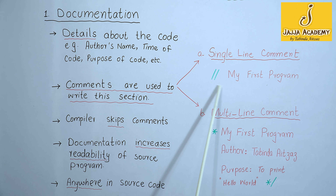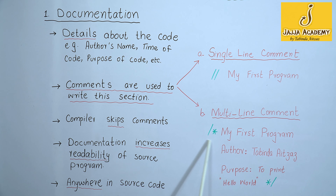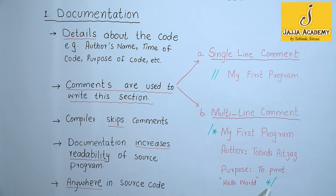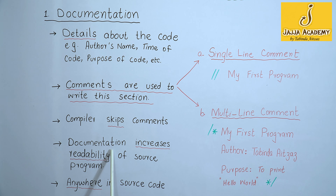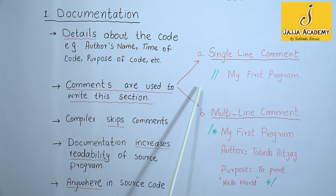Whenever the compiler finds a double slash, indicating a single line comment, it skips that line. Similarly, when the compiler reads the slash-asterisk symbol indicating a multi-line comment, it searches for the closing symbol which is asterisk-slash. Documentation increases the ability of the source program. The documentation section is basically used to enhance human understandability and readability of the source program, and this section may exist anywhere in the source code.